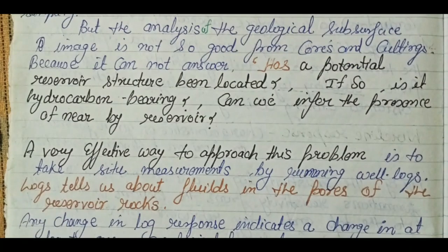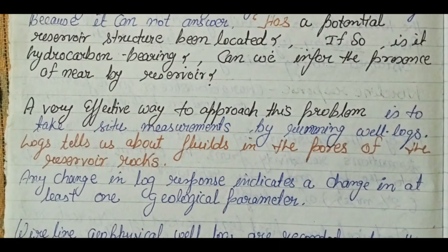A very effective way to approach this problem is to take in-situ measurements by running well logs. Logs tell us about the fluids in the pores — whether it's water, oil, or gas — information we cannot get from subsurface cuttings. Any change in the log response indicates a change in at least one geological parameter. For example, if fluid changes from water to hydrocarbon, at least one parameter — such as resistivity, density, or velocity — will change, and we will detect it from well log responses.